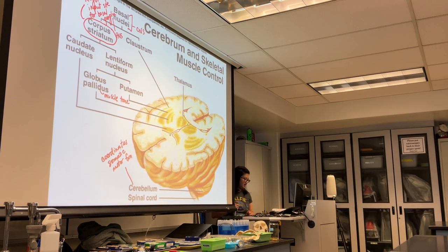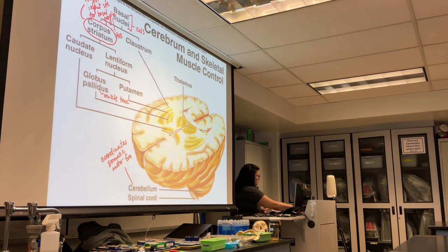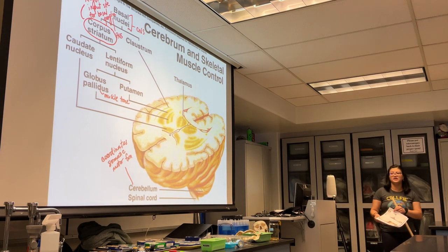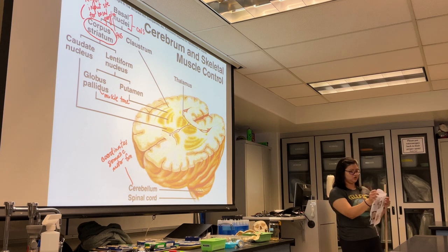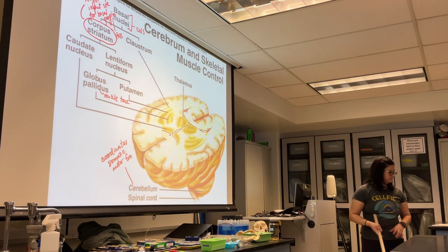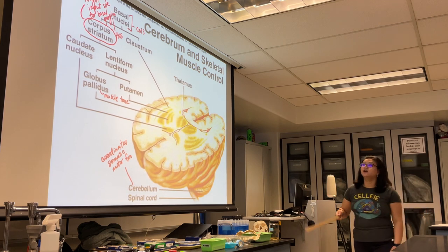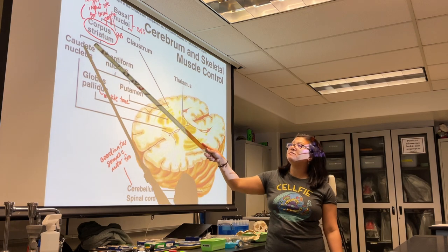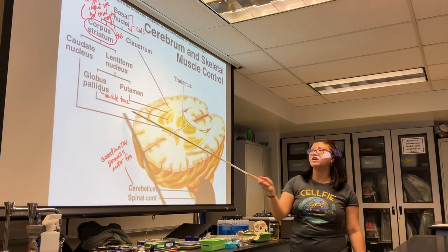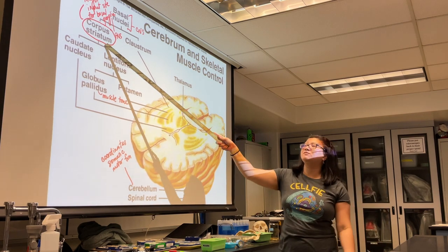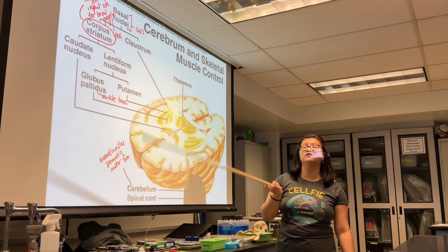The claustrum is going to be really important for the subconscious processing of visual information. The corpus striatum is divided into two parts: the caudate nucleus and the lentiform nucleus. The caudate nucleus controls large automatic movements of your skeletal muscles.